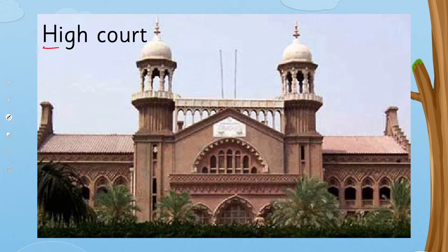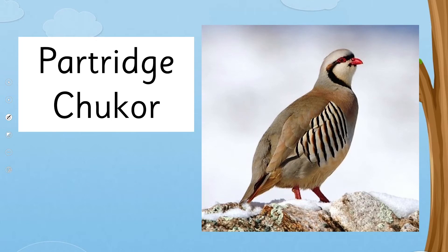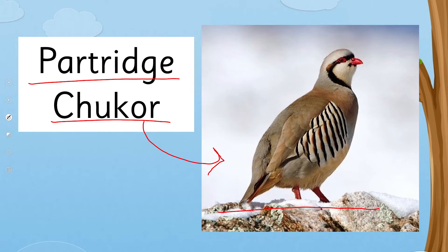High court is also a name of a place — it's a court which deals at the district level. Then, do you know about markhor? This beautiful animal is our national animal. Markhor — it's a noun. Partridge, or chukor — it's a noun; it's a bird, and this beautiful bird is our national bird.